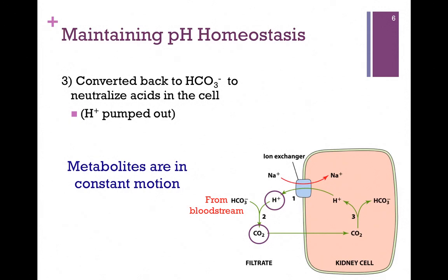You'll see this indirect approach as a very common theme in biochemical systems. Metabolites are in constant motion — an important principle throughout the semester. You might wonder why we don't just have a transporter for bicarbonate to move it directly inside the cell. We could, and as we'll see in a later chapter, there are many such transporters in biological systems. However, that process is slower. Carbonic anhydrase is very fast and can quickly convert bicarbonate to CO2, and simple diffusion is faster than ion transport. This allows us to adjust pH very rapidly, which is critical because proteins, enzymes, and molecules inside the cell are extremely sensitive to pH.